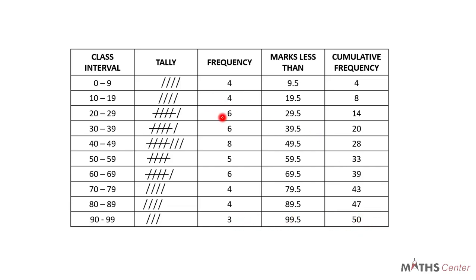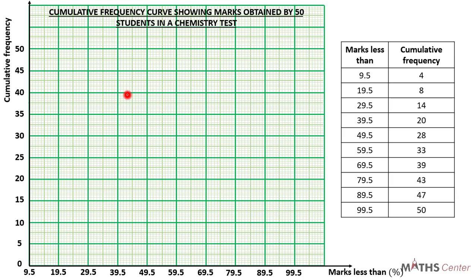So we are now done with the frequency distribution table. We have the graph sheet here. We have the marks less than on the horizontal axis and the cumulative frequencies on the vertical axis. You choose a scale such that the graph or your curve will cover a large portion of the graph sheet. Let's plot the points.